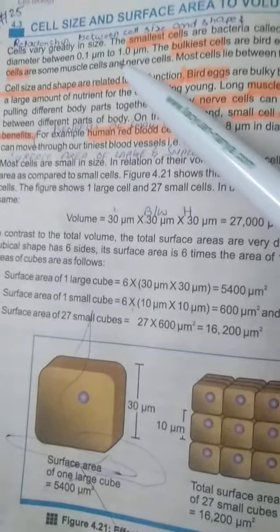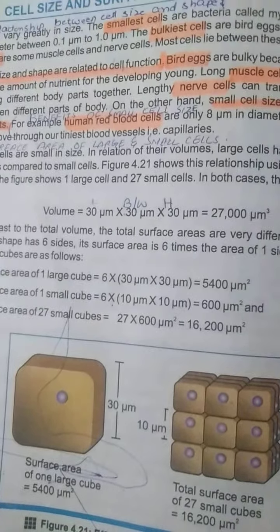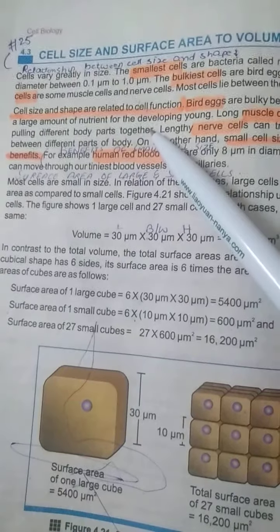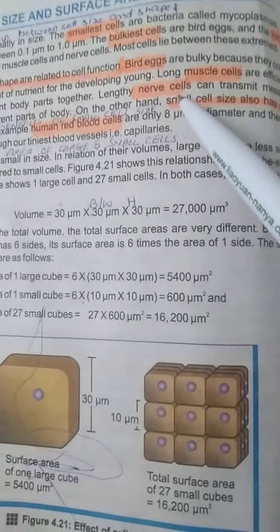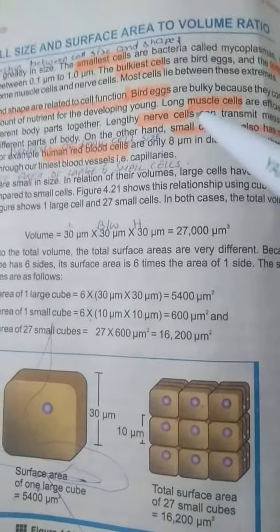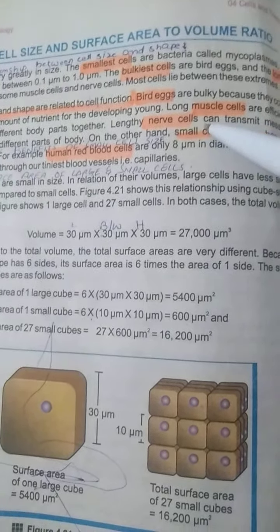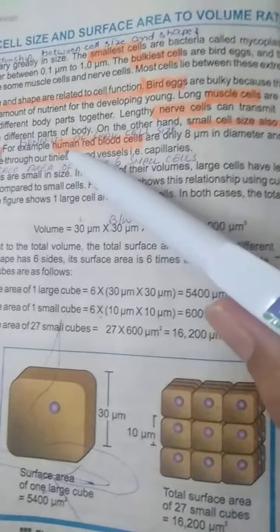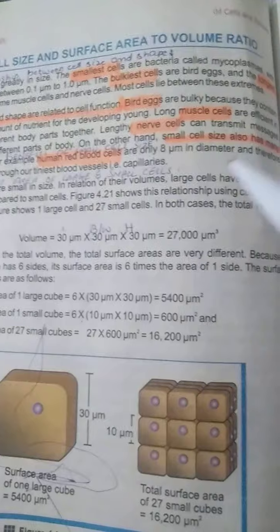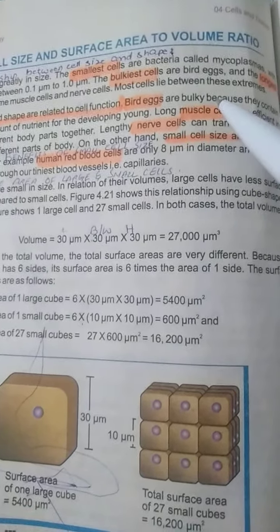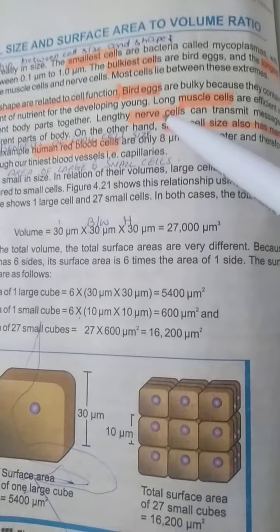Then the long cells that include muscle cells and nerve cells. They are beneficial. Muscle cells are efficient in pulling different body parts together. When we move, our different muscular activity takes place that are done by muscle cells. In lengthy cells, we have nerve cells also called neurons. What do they do? They transmit messages between different body parts of living organisms. Transfer of different messages from brain to body parts and different organs are done through nerve cells or neurons.